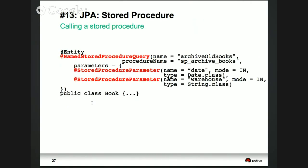In JPA there is a capability to do named queries, which are pre-compiled and allow you to set values. Now there is the same mechanism for stored procedures — a @NamedStoredProcedureQuery annotation. You specify a convenience name, the database stored procedure name, and stored procedures can take in and out parameters, which you can specify as part of the annotation.